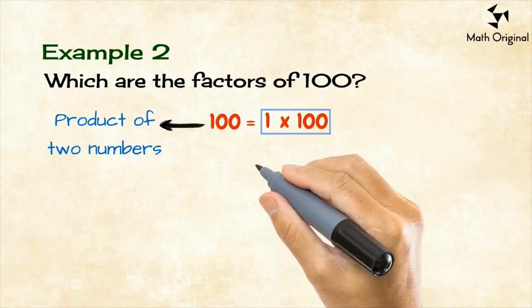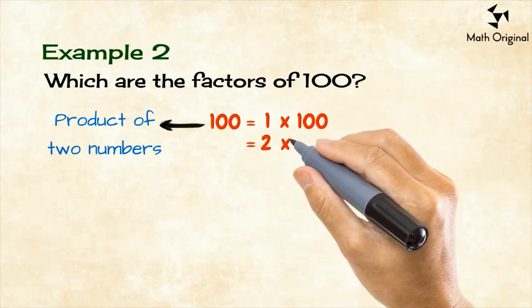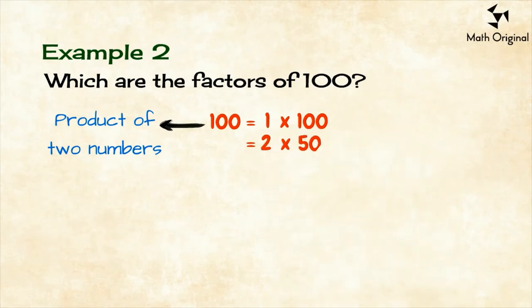Then, we try the number 2. Is 100 divisible by 2? Yes. The product is written as 100 equals 2 by 50.